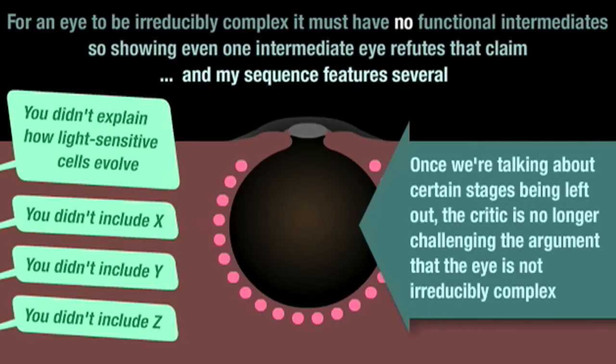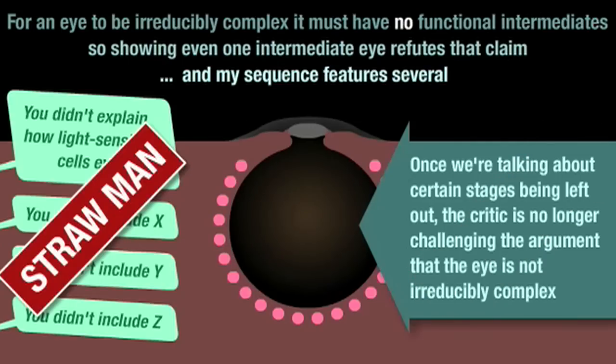Once we're talking about certain stages being left out, the critic is no longer challenging my argument that the eye is not irreducibly complex. My sequence showed how the eye's visual function can evolve by degrees. To criticize it in effect for not including every aspect of eye evolution one might want to know, as if such information could be condensed in a ten minute video, is to set up and attack a strawman.